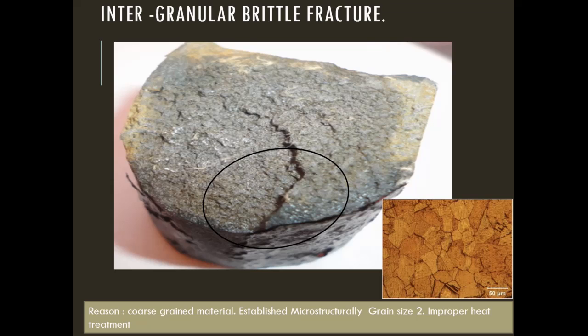This is an intergranular brittle fracture. The surface is highly crystalline, and a zigzag crack starts propagating from the surface and penetrates deeply into the material. When a sample was cut and examined microscopically, the grain size was found to be ASTM grain size 2. Steel samples with very large grains of ASTM 1, 2, or 3 cannot support any load and will eventually break.